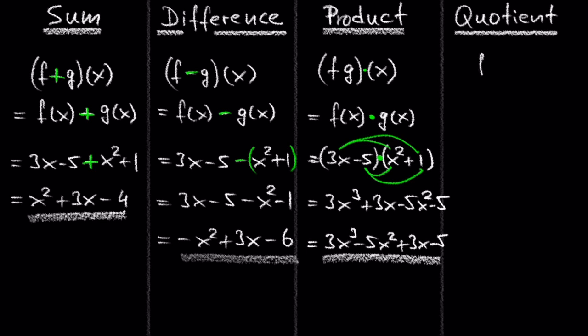What about f divided by g? We just have to divide f by g, which we can write as f of x over g of x. So we get 3x minus 5 over x squared plus 1.